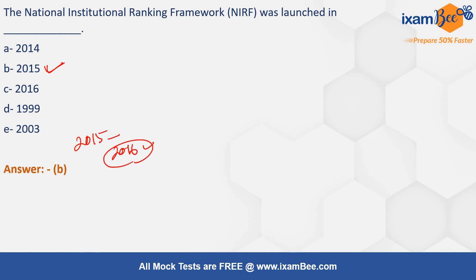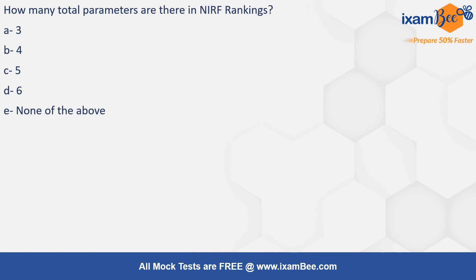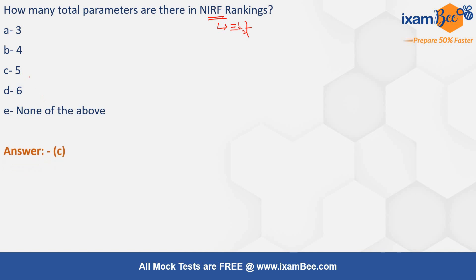Now we will see more details about NIRF. It has different parameters with different weightages. Pause the video and try to answer how many parameters there are. The answer is: there are a total of 5 parameters.